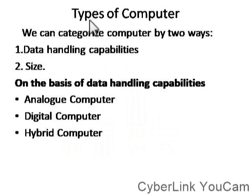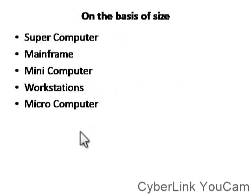Now let us move on to the second topic: types of computer. We can categorize computers in two ways — first, by data handling capabilities, and second, on the basis of size. On the basis of data handling capabilities, there are three types: analog computer, digital computer, and hybrid computer. On the basis of size, we can see super computer, mainframe, mini, workstation, and micro computer.